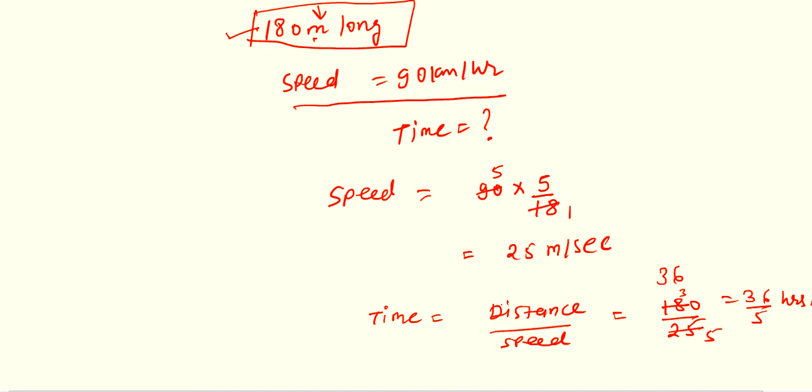Question number 2: same type as question 1 — a train 150 meter long passes a telegraph pole, time 10 seconds is given. First calculate speed in meter per second, then at last convert that speed into kilometer per hour. You can solve question number 2 on your own.